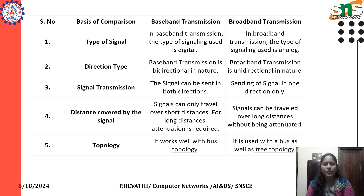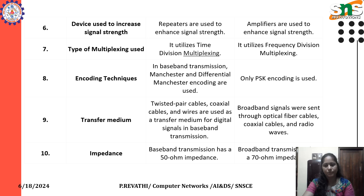Regarding topology: baseband transmission works well with bus topology. In broadband transmission, it is used with bus as well as tree topology. Regarding devices used to increase signal strength: in baseband transmission, repeaters are used to enhance signal strength, while in broadband, amplifiers are used to enhance signal strength.